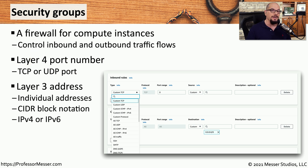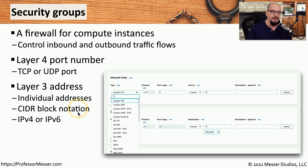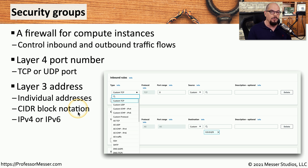Or we can use OSI Layer 3, which would be an IP address — either as an individual IP address or perhaps an entire block of addresses. You can usually add this using CIDR block notation to the firewall. And of course, we can manage both IPv4 addressing and IPv6 network addressing.